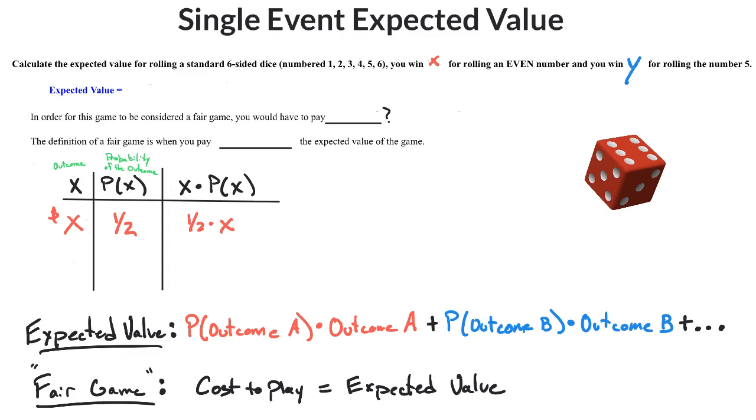Your next outcome is that you could win Y dollars for rolling the number five. There's just one number five on there, so that would be one out of six. These things could be anything—you could say between the numbers three and five, or the numbers five and six, or maybe prime numbers. All sorts of different things it could be. Nonetheless, you just take that outcome, multiply by the probability of that outcome, and then add all those things together.